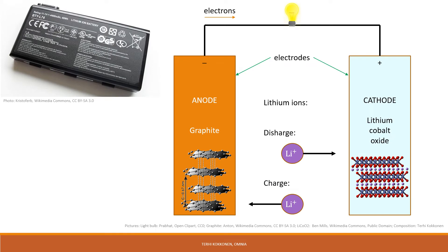Electrochemistry refers to the process of converting stored chemical energy into electricity. It involves the exchange of ions. An ion is an atom with a net electrical charge. An electrolyte is a medium containing ions. This includes most salts, acids, and bases dissolved in water. The most common everyday example of electrochemistry in action is the battery.